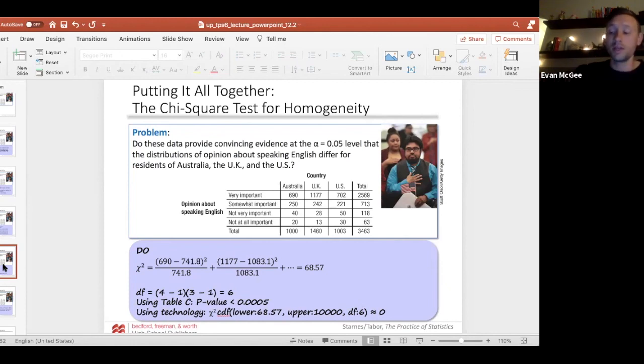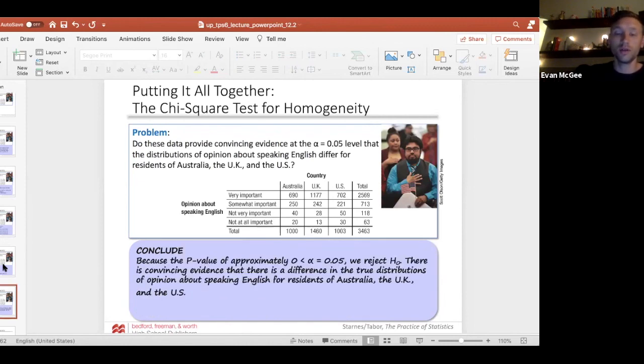We've got our test statistic and our p-value. Make sure you've shown the degrees of freedom. Then you can draw your conclusion at your alpha level. Our p-value is approximately zero, which is less than the alpha level. We reject the null. There is convincing evidence that there is a difference in the true distributions of opinion about speaking English for residents of Australia, the UK, and the US.